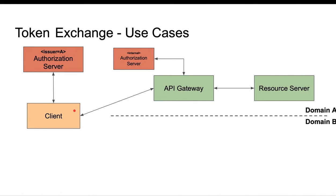In those cases there may be a second, internal server which is able to translate an access token — or for that matter a different token — given to the API gateway, and exchange it for one that is enriched with roles or other attributes of the current user or even application. This enriched token is then used internally against the resource server.